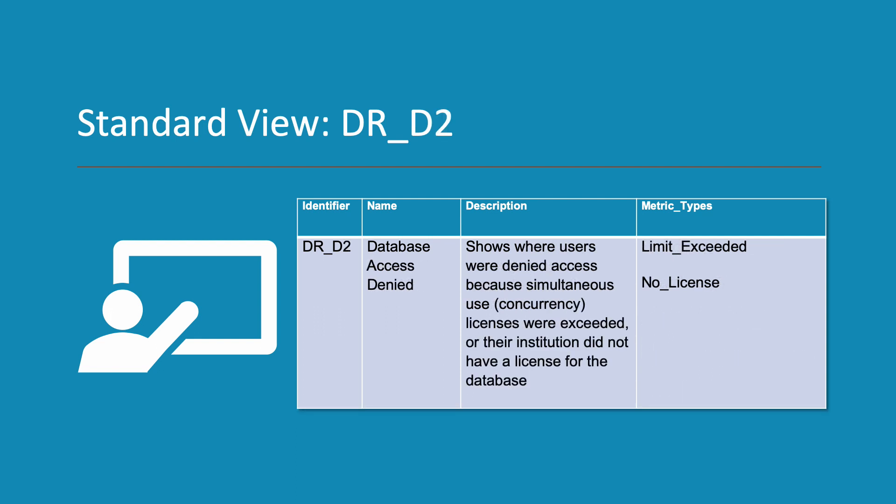Standard view DR-D2 shows where users were denied access because their simultaneous use or concurrency licenses were exceeded, or their institution did not have a license for the database. The metric types in this report are limit exceeded and no license.